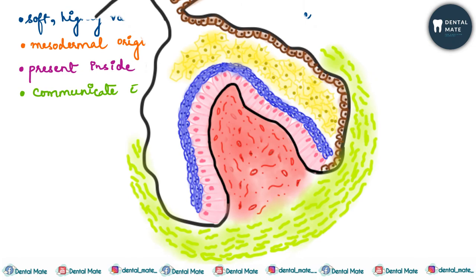The ectomesenchymal condensation enclosed by the concavity of the enamel organ — this is the enamel organ here — and this ectomesenchymal condensation leads to the formation of dental pulp.